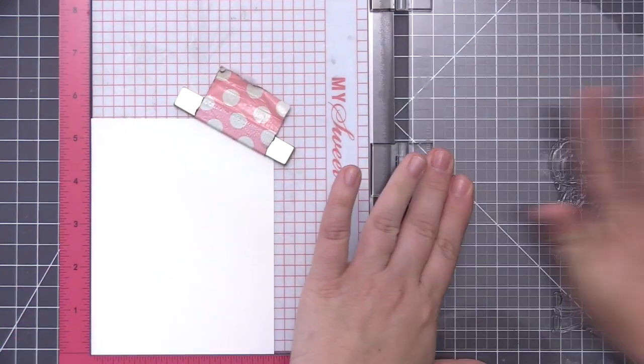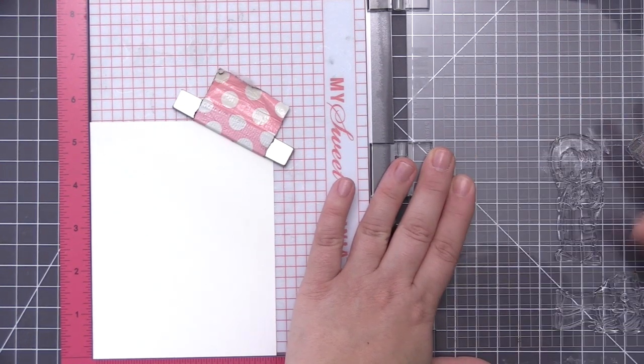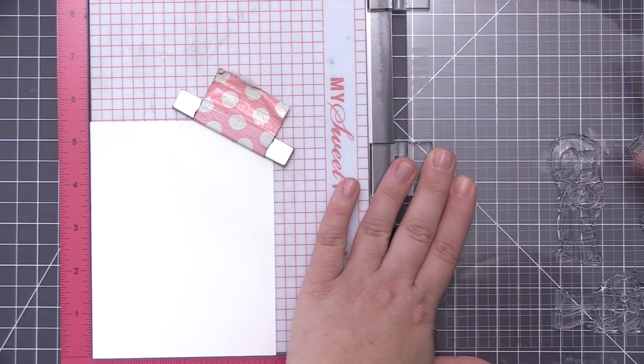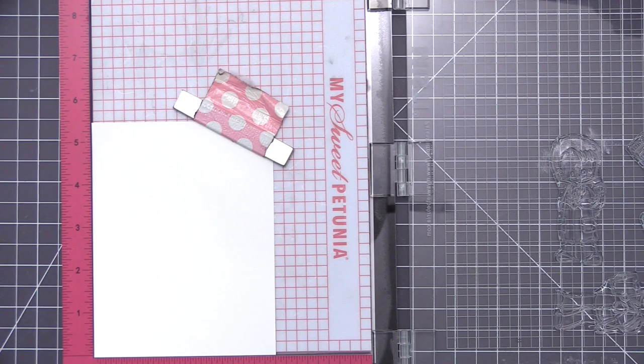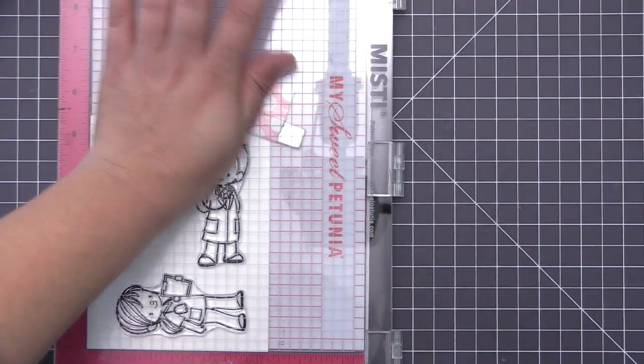I've got my MISTI here to do my stamping. I'm only using this because I want to stamp all of the images at once, so you definitely don't need this—you can use a normal acrylic block. Since my stamps are new, I am rubbing the surface of them with the palm of my hand; it just helps them cling onto that ink a little bit better.